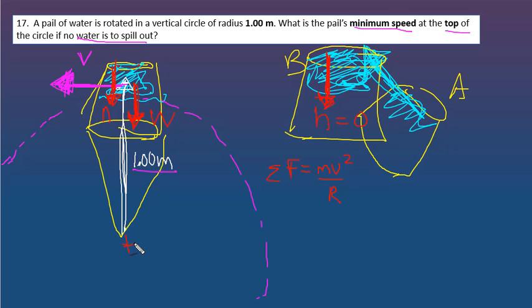And remember, the new mnemonic is n must win. So you have the normal force plus the weight equals mv squared over r.